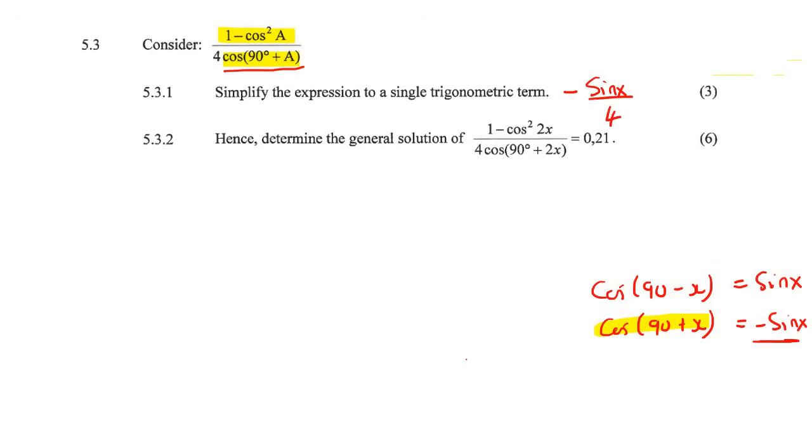The next question says, hence, determine the general solution of this. So what you guys need to do is you need to try see the pattern between these two things, between this one and between that one. So let's have a look at those carefully. So here they're using an a and an a. Here they're just using a 2x and a 2x. But besides that, everything is exactly the same, right?